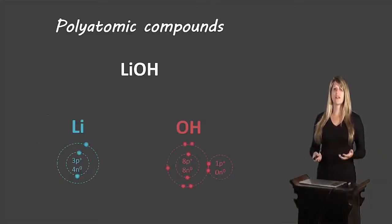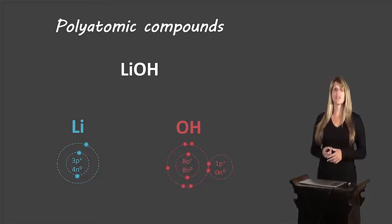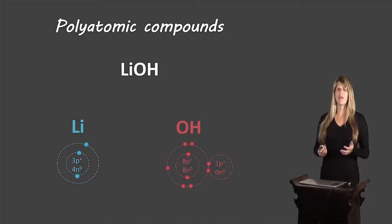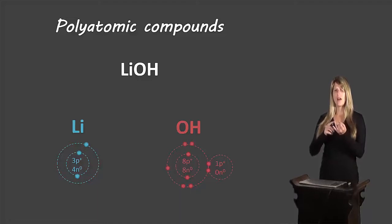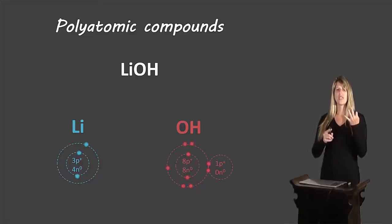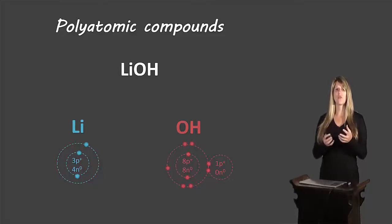So what is a polyatomic ion that's involved in a polyatomic compound? Here we have lithium hydroxide. If you take a look at the symbols for that compound, you'll notice something very different than the other compounds we've been dealing with. It has lithium, oxygen, and hydrogen in it — three different elements. So far all of the compounds we've learned how to name have only two elements in them.